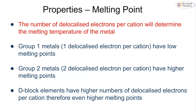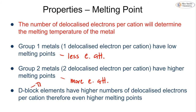The number of delocalized electrons per cation will have a factor in the melting temperature of the metal. If you have a group one metal, it has one delocalized electron per cation, so it has a lower melting point because there are fewer electrostatic attractions. Group two metals have two delocalized electrons, giving more electrostatic attractions. D-block elements, or transition metals, have even higher numbers of delocalized electrons, so they tend to have the highest melting points. So comparing a group one, group two, and a transition metal, you will see an increase in their melting points.